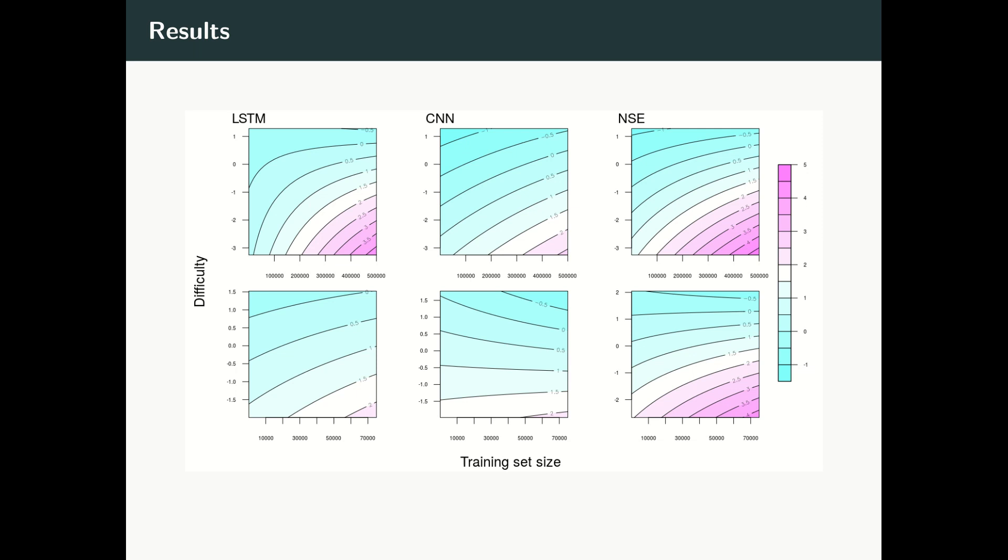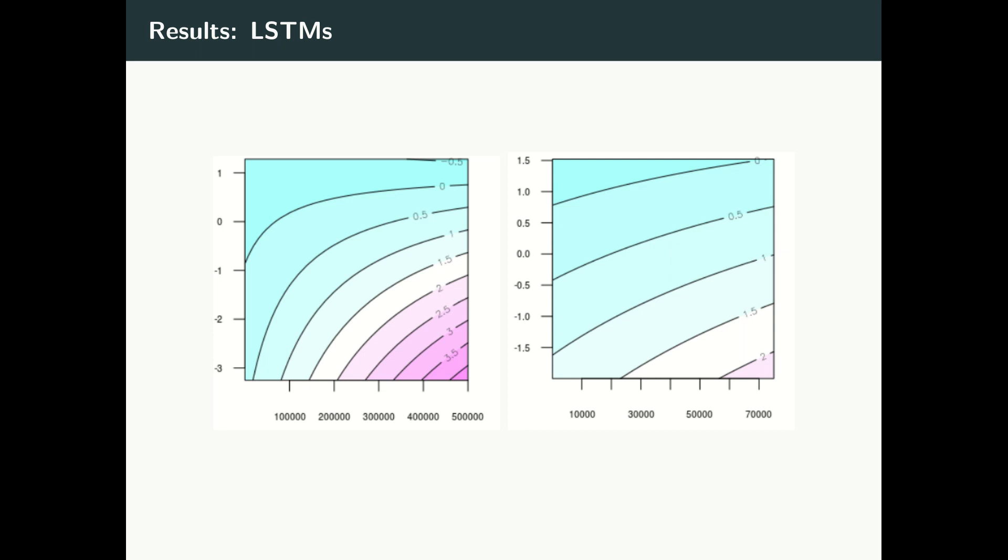First, we'll look at the results for the LSTM model for both the NLI and the sentiment analysis tasks. We can observe two interesting patterns here. First, the easier items are easier than the harder items. This doesn't sound that interesting, but remember that these difficulty values were learned from human response patterns. So the fact that there is consistency between the model performance in terms of difficulty and a difficulty parameter learned from the humans is an interesting result. Second, we see that as more data is added to train the model, the easier items get even easier faster than the harder items. So not only are the easier items easier, but they are also easier to learn.